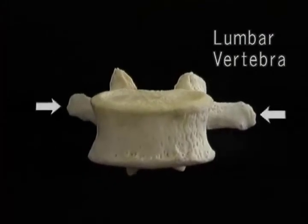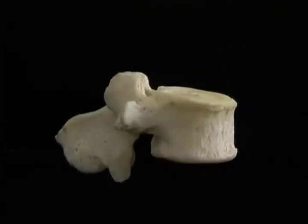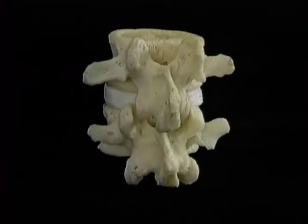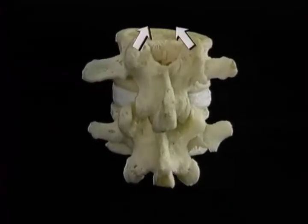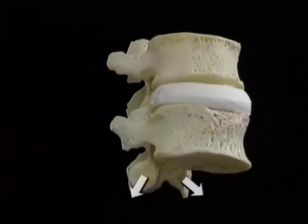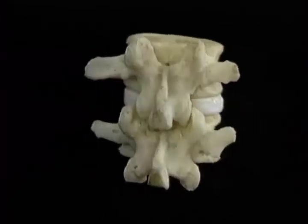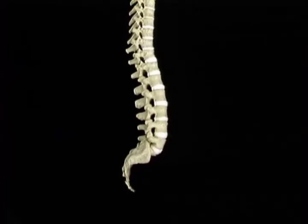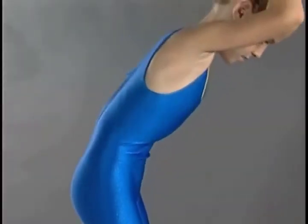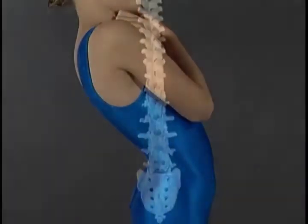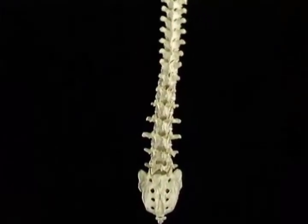In lumbar vertebrae, the transverse processes are small, and the spinous process is broad and points almost straight backwards. The upper articular processes of lumbar vertebrae face inward; the lower ones face outward. Because of this arrangement, there's almost no rotation between lumbar vertebrae. The movements that can occur in the lumbar spine are flexion, extension, and lateral flexion to either side.